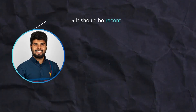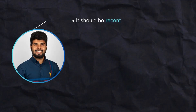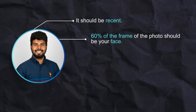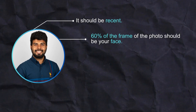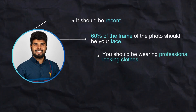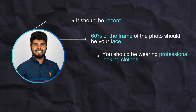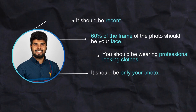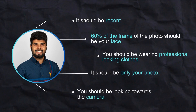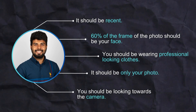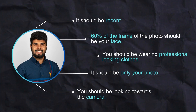To make sure you have a really good picture, follow these five golden rules. First, it should be recent. Second, 60% of the frame should be your face. Third, you should be wearing professional-looking clothes. Fourth, it should be only your photo. Fifth, you should be looking towards the camera.